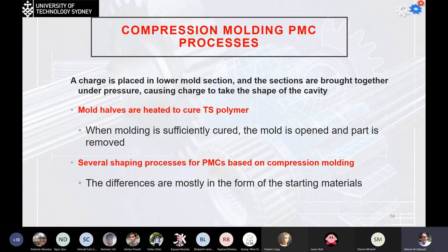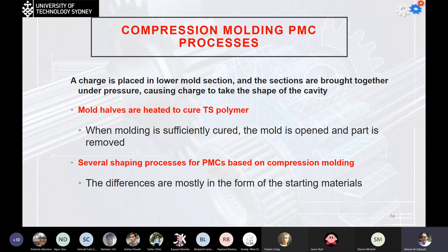For compression molding PMC processes, the charge is placed in the lower mold section and the sections are brought together under pressure, causing the charge to take the shape of the cavity. The molds are heated to cure the thermosetting polymer at a higher rate. When the molding is sufficiently cured, the mold is opened and the part is removed. Several shaping processes for PMC are based on compression molding and are mostly defined by the form of the starting material.